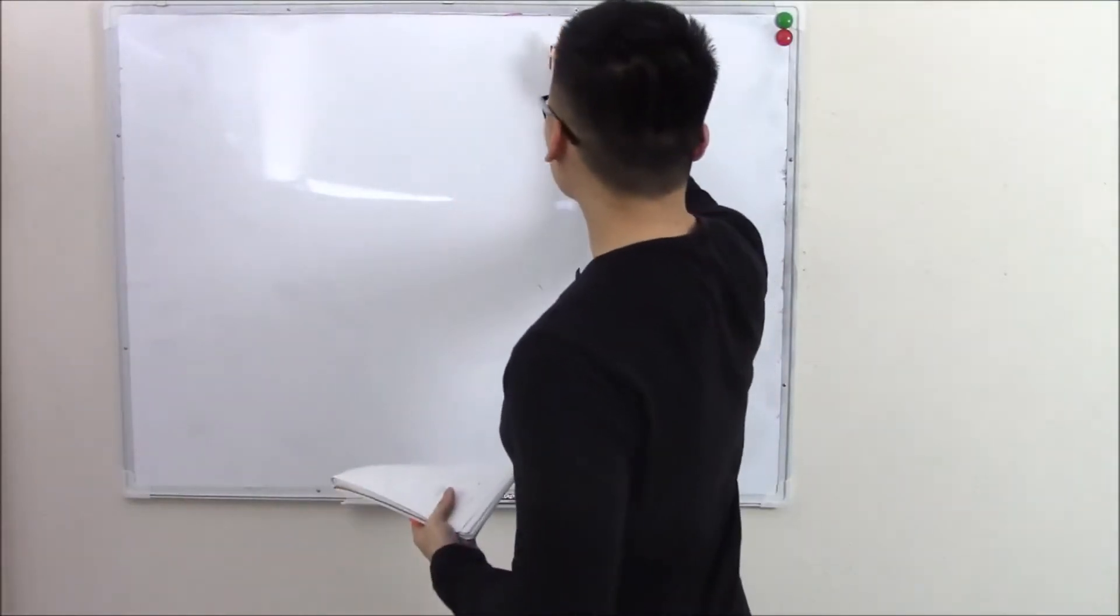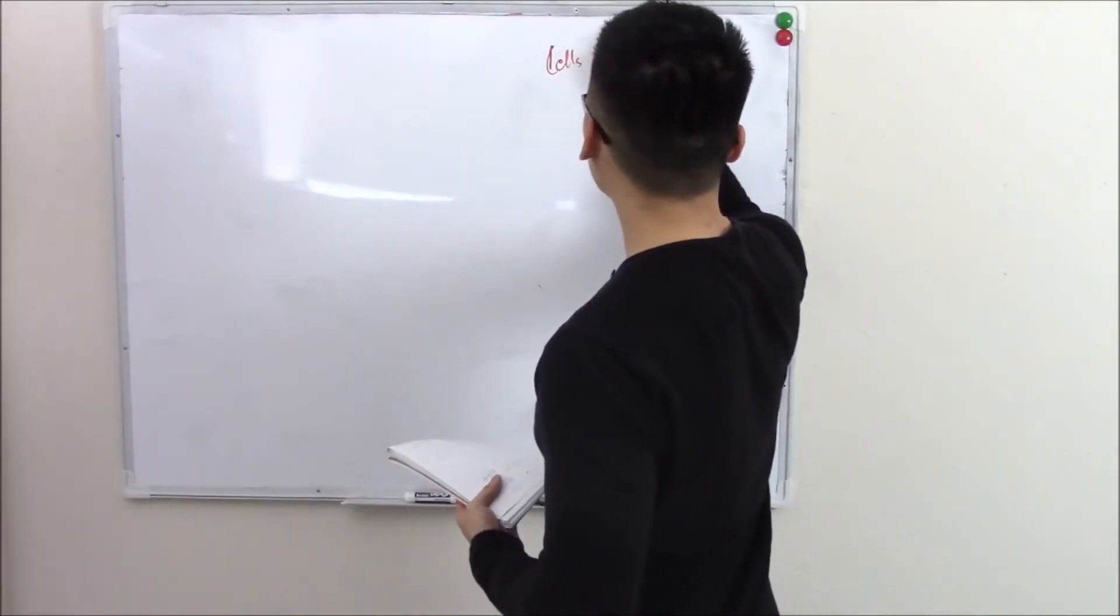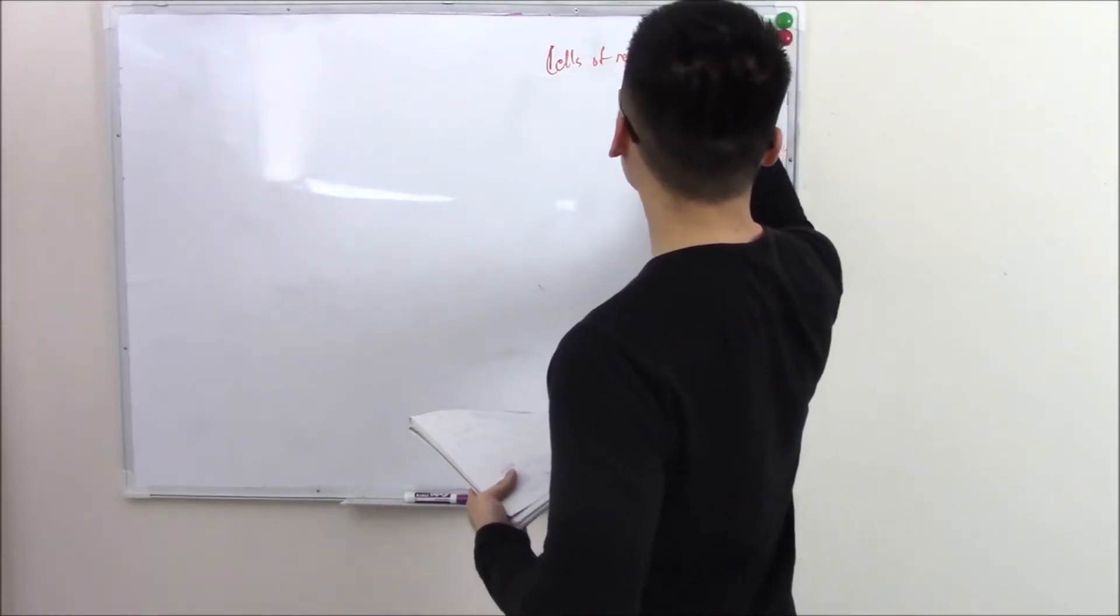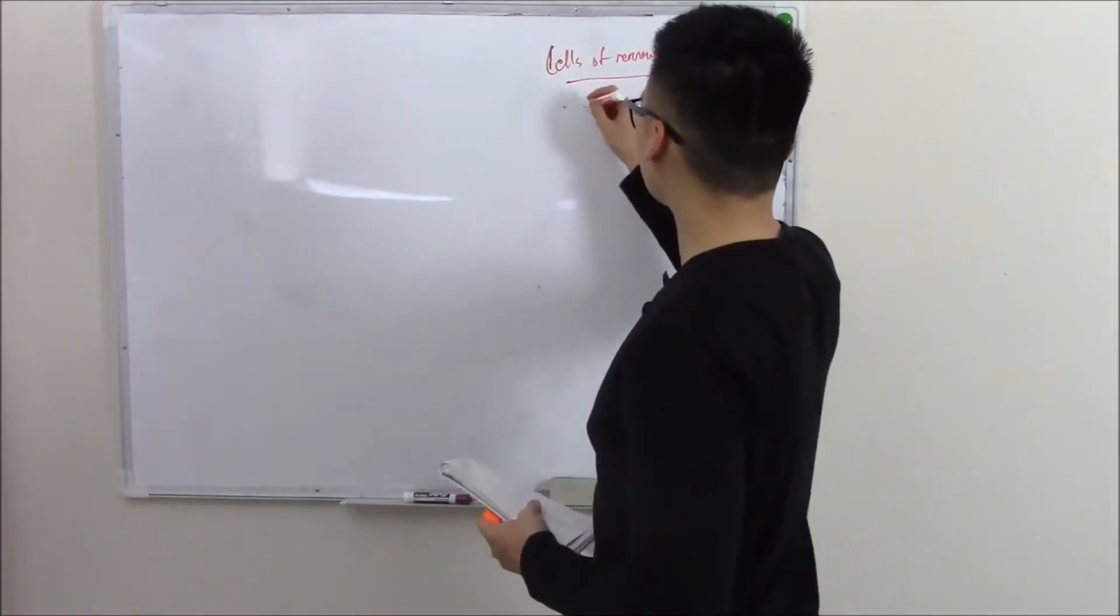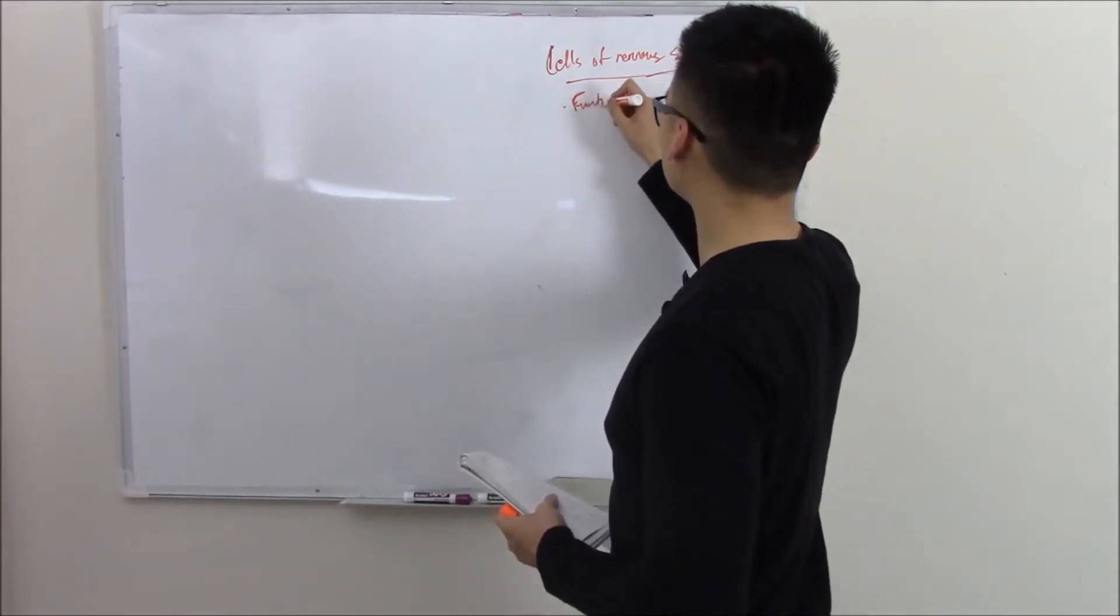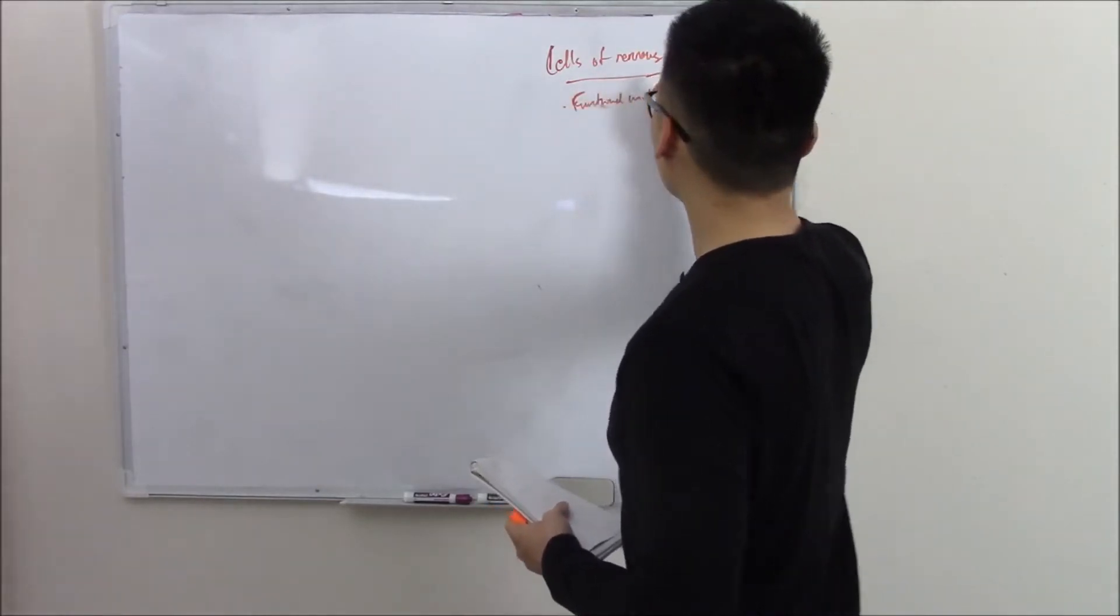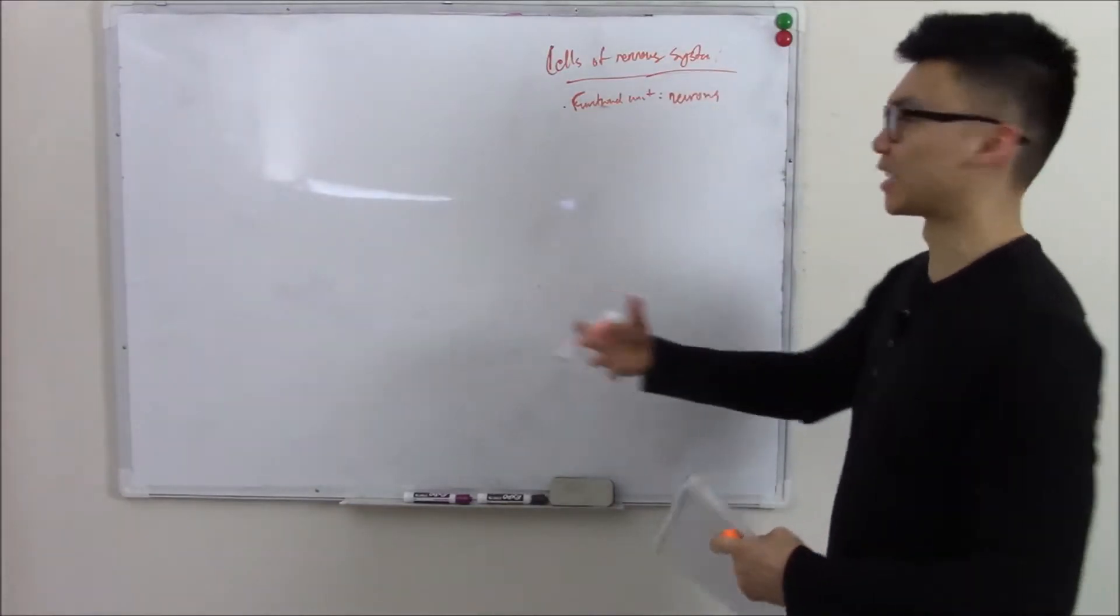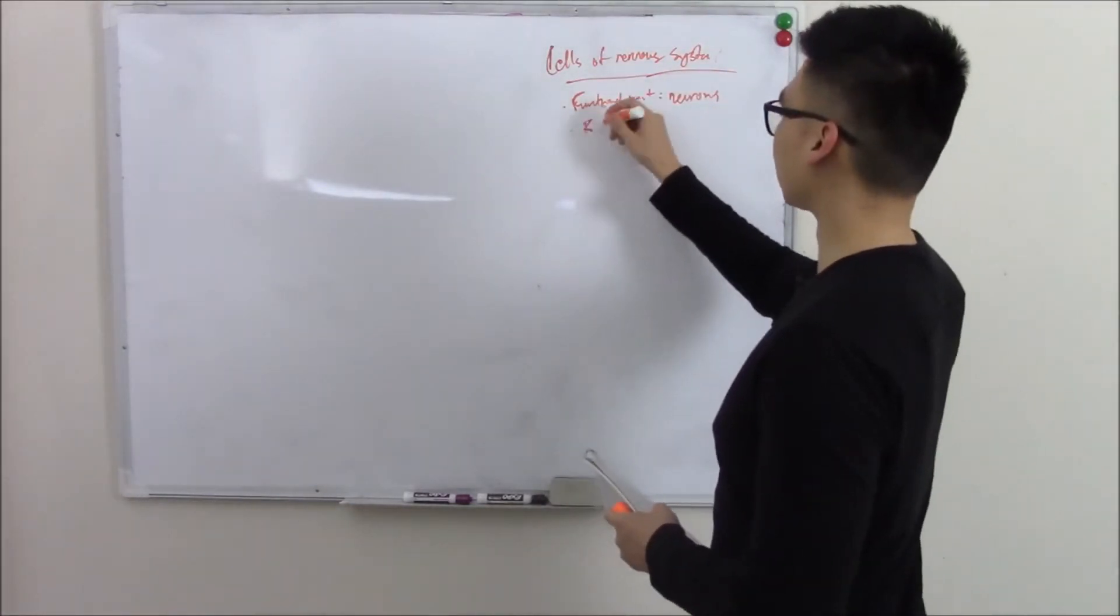The cells that make up your nervous system are broken up into two groups. That'll be the cells that make up your functional unit, which is your neurons, and then basically the second group is everything else.